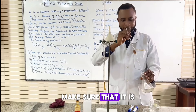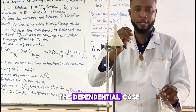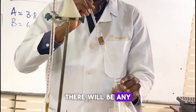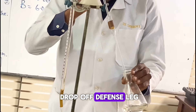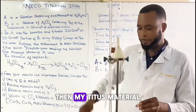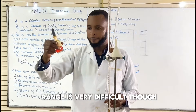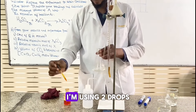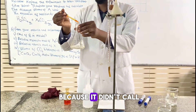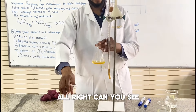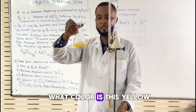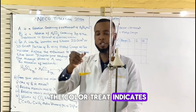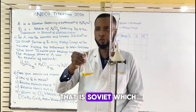Make sure that the tip of the pipette touches the base of the conical flask, so that there won't be any drop of the base left out. You can see that my indicator is methyl orange — it's very deep in color. I'm not going to use three drops; I'm using two drops, because it's deep in color. Can you see? The color is yellow. The color will indicate the endpoint.